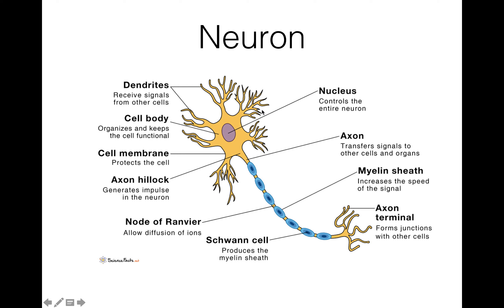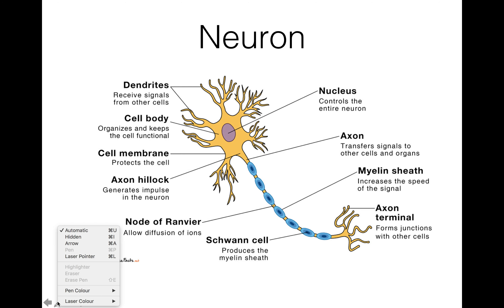This is the cell body, and this is the axon. The function of dendrites is to receive signals from other cells. In the cell body there is a nucleus.